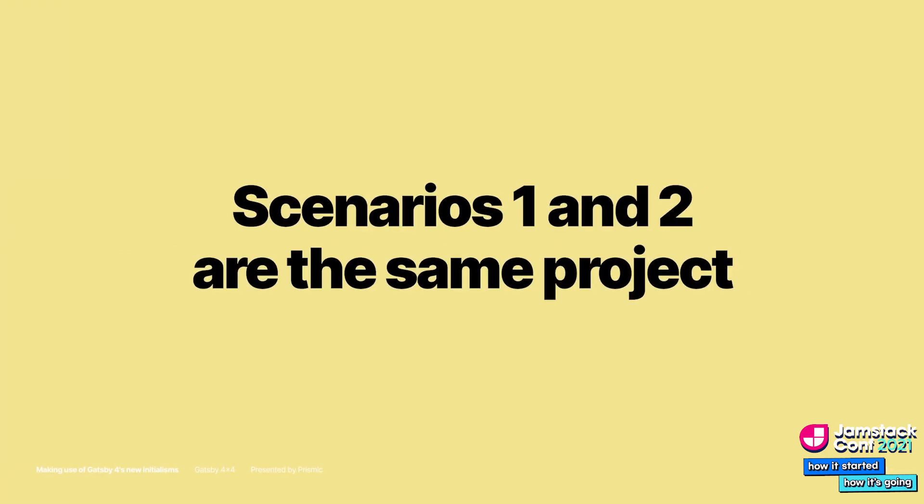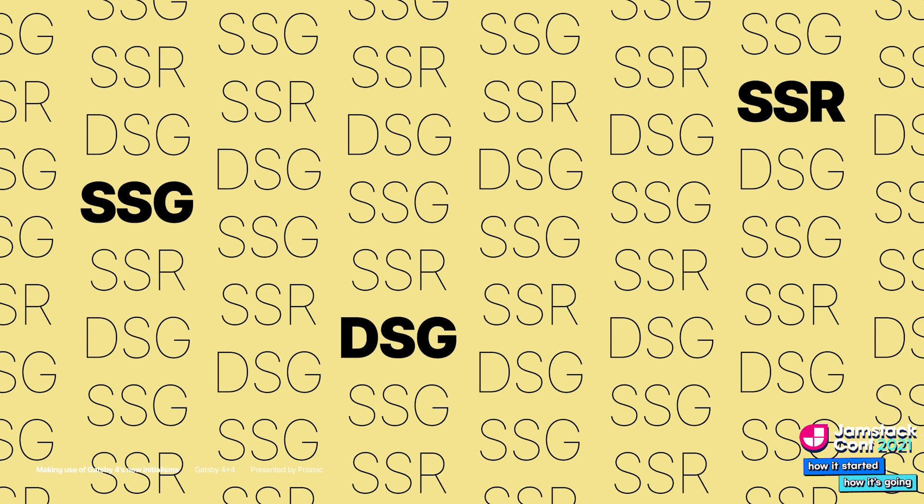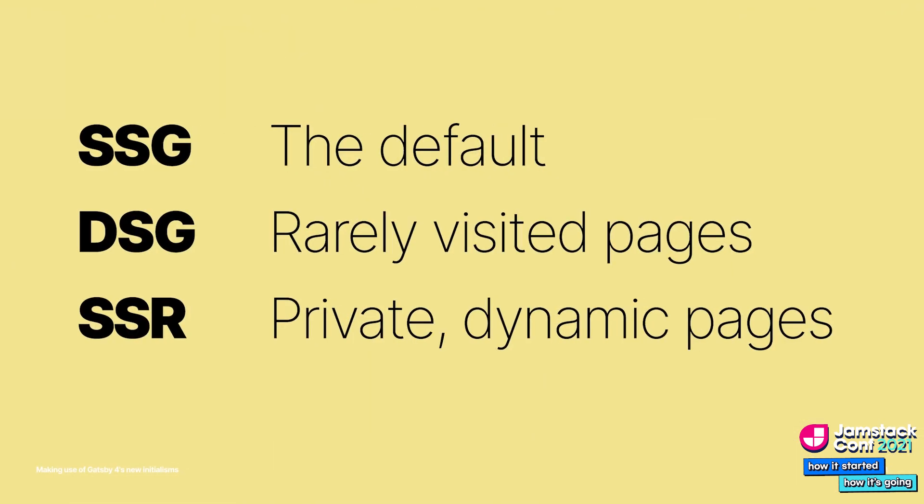A third scenario could be a combination of scenarios 1 and 2: an e-commerce site with a large blog that needs to display dynamic data. The solution there is a combination of all three rendering methods — SSR, SSG, and DSG. By default, build all your pages statically with SSG. If a page is not accessed often, say less than 100 views per month, defer building the page to the first visit with DSG — this also makes your build quicker.